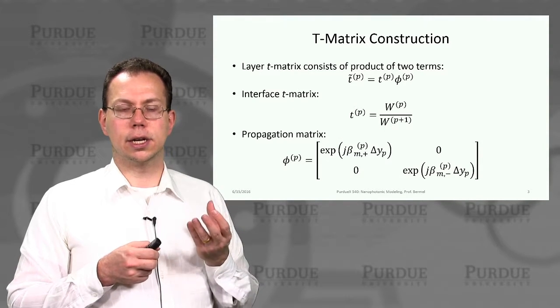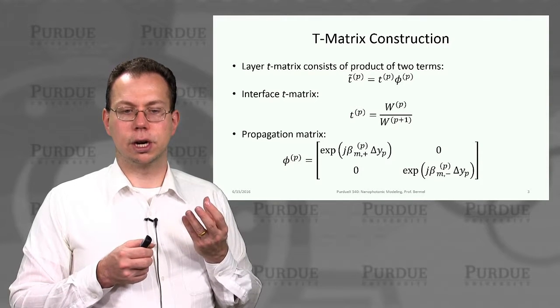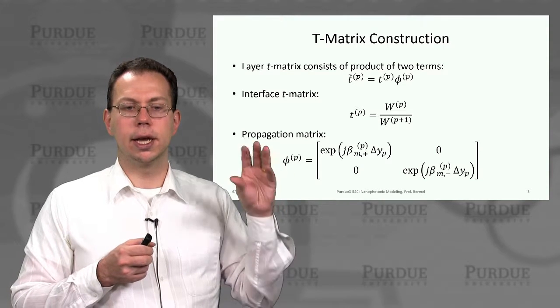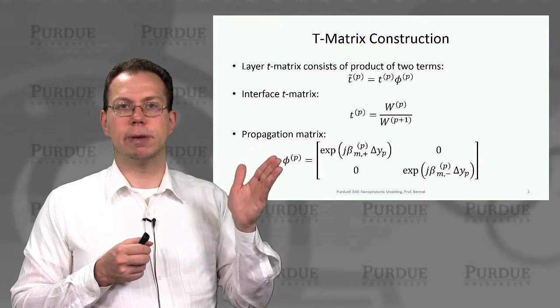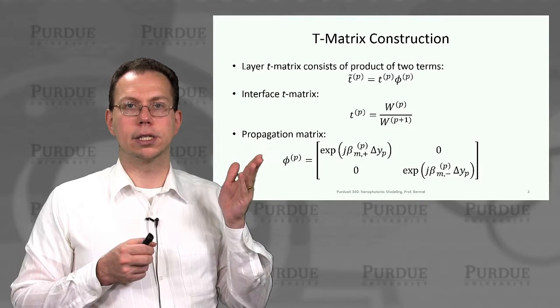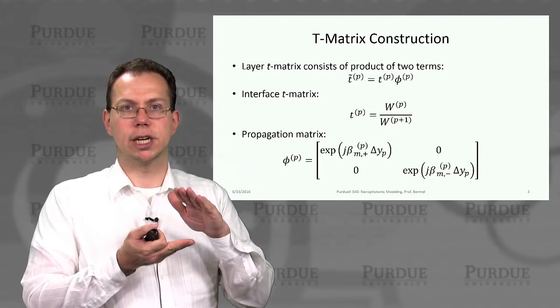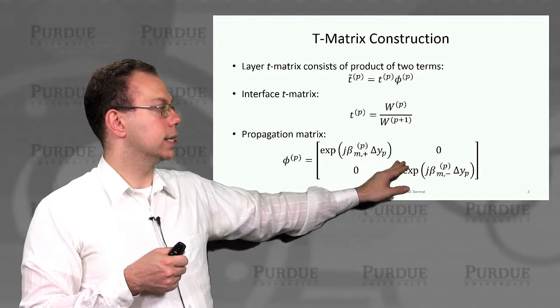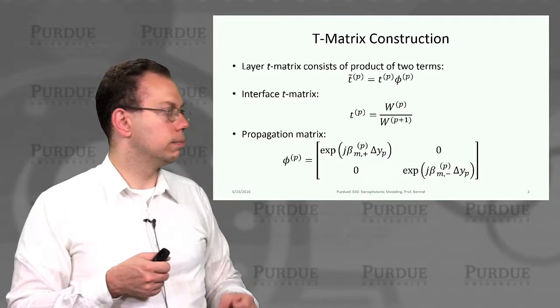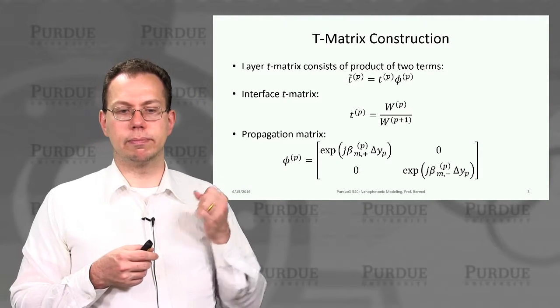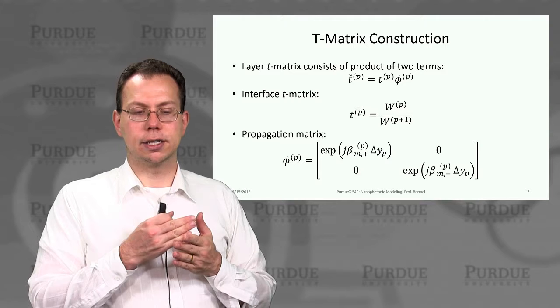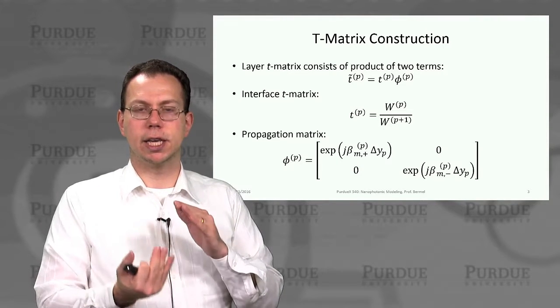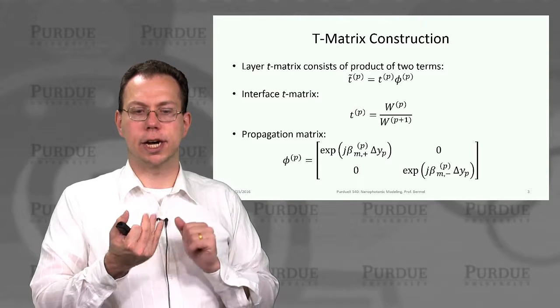This T tilde layer T matrix has two terms. The Tp, which I mentioned earlier, is like the quotient of those two Wp's. And then there's this φp, φp basically tracks the change in the phase associated with propagation from Yp to Yp minus one. And so this is basically captured as like kind of this diagonal term in which we've written in a very general form. And so we just say that there's some sort of phase change which depends on some beta. Beta being the wave vector in the z direction.